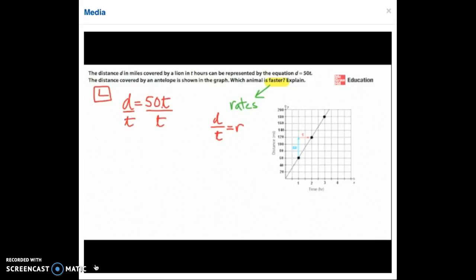notice that on the left hand side I have distance divided by time and on the right hand side the t's divide out and I have 50. So the rate of the lion is 50 miles per hour.